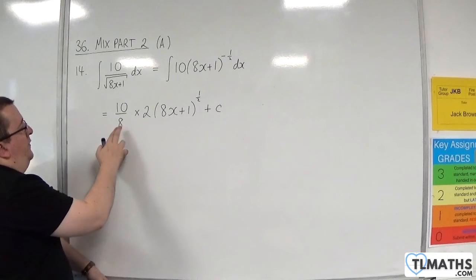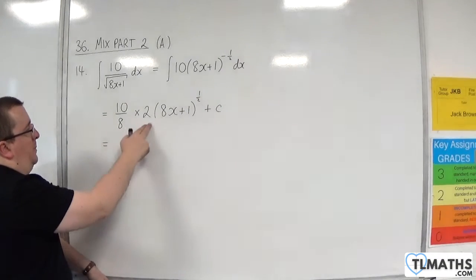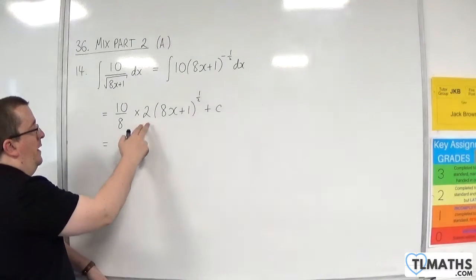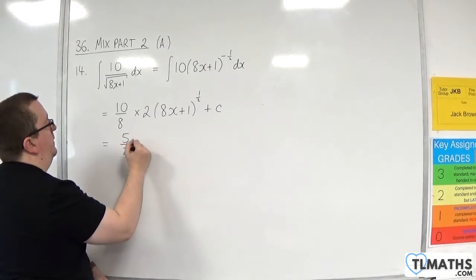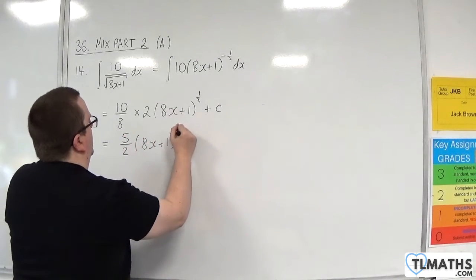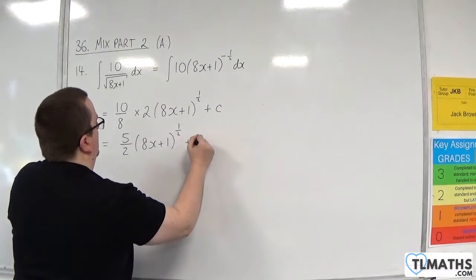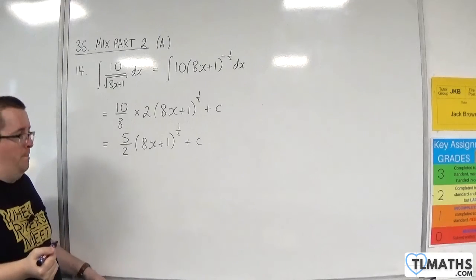So 10 eighths is 5 quarters, times by 2, which is 5 halves. So this is going to be 5 halves times (8x + 1) to the half, plus a constant c.